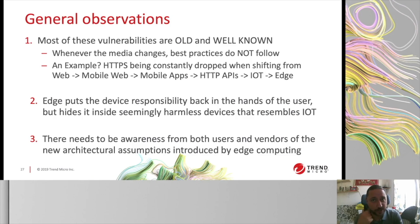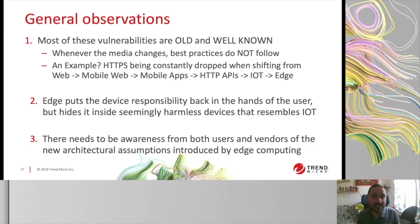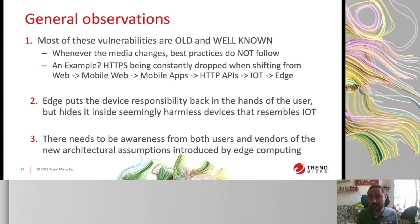This is a dire situation that seems to stem from the fact that every time we shift to a new technology, the best practices acquired on the old one — such as using HTTPS and authentication — seem to disappear. We've seen this pattern moving from web to mobile, to HTTP REST APIs, to IoT, and now to edge. Additionally, edge creates a false sense of security because these devices resemble simple IoT cameras, but they actually pack significant computational power and additional tasks. Users acquiring these devices and vendors selling them need to be aware that this is not just a fancy new IoT device — it comes with greater dangers and requires more precautions.